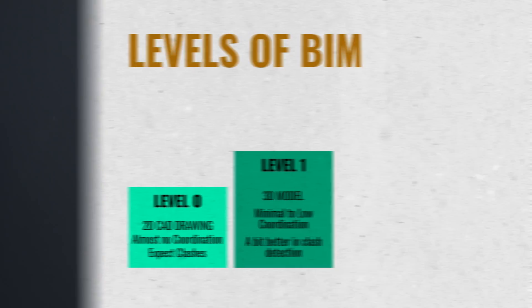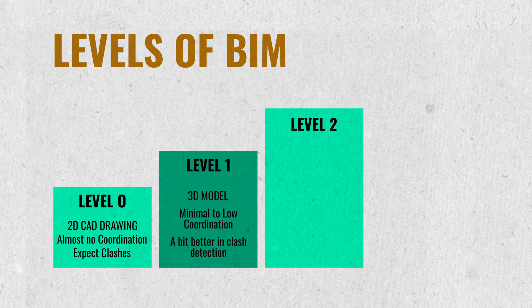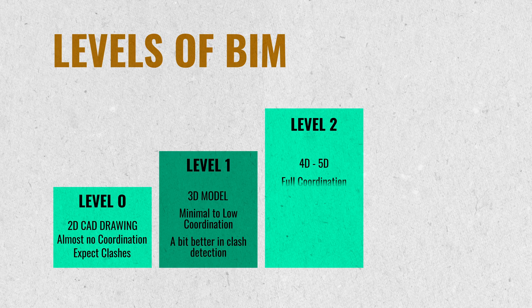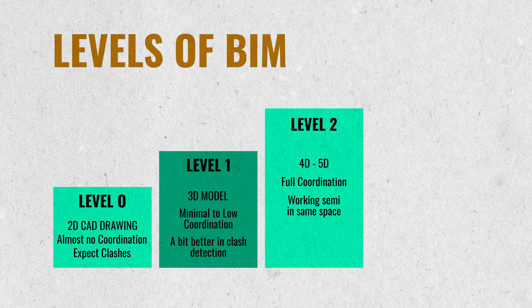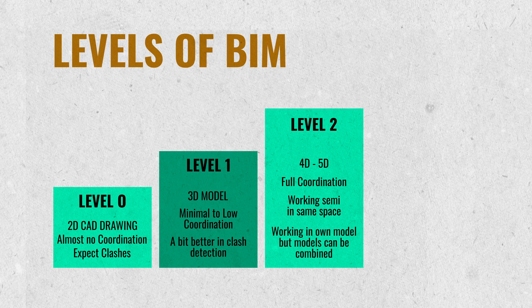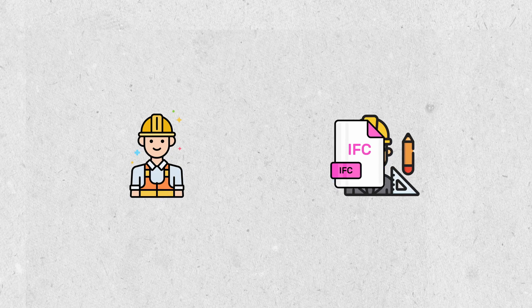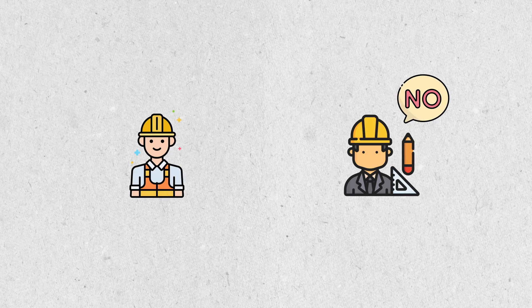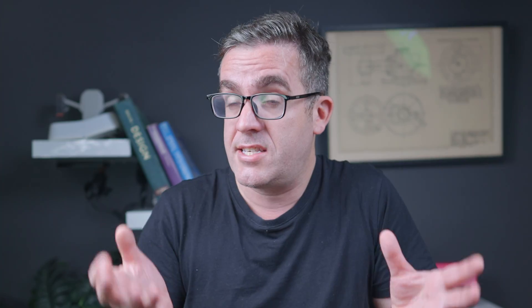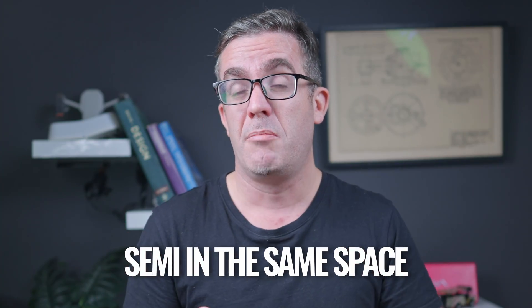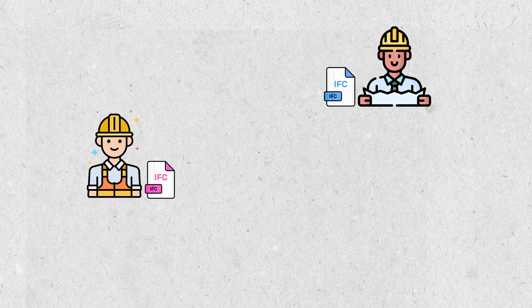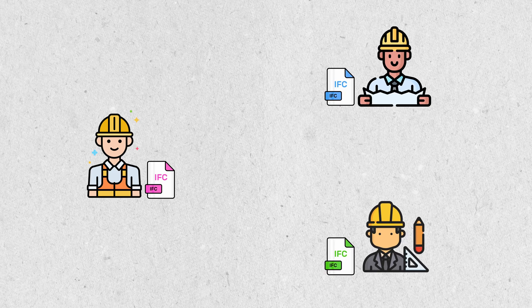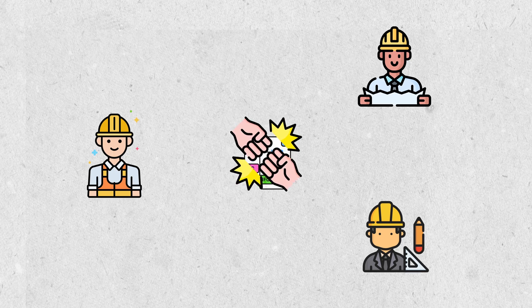Level two BIM is really where the benefits start to kick in. You start to work with the architect, coordinating backwards and forwards, processing data from one area to the other. You're not working in the same space yet, but you are making sure your model is coordinated. You may make changes and send them to the architect to update their model. The models may be combined at this point, but most of the time you're working in your own model — so if you're not properly coordinated, a structural engineering model and an architecture model can diverge from each other.